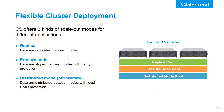The third layer is to replicate data remotely between clusters to prevent any natural disasters. For different applications, you can create multiple storage pools in a cluster of three kinds of scale-out mode, including replica, erasure code, and distributed mode. By leveraging InfraTrend's proprietary RAID technology, you can build a cluster starting from one node with distributed mode.